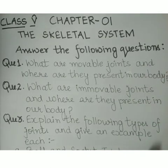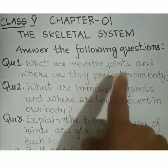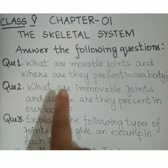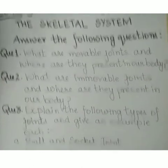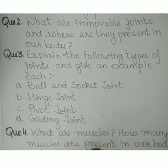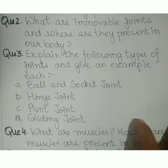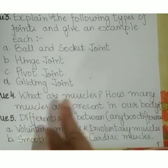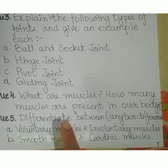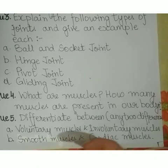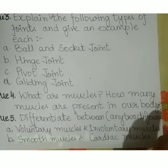Now students, these are the questions you will be doing in your notebook. Question 1: What are movable joints and where are they present in our body? Question 2: What are immovable joints and where are they present? Question 3: Explain the following types of joints with an example each. Question 4: What are muscles and how many muscles are present in our body? Question 5: Differentiate between voluntary and involuntary muscles, and between smooth muscles and cardiac muscles.